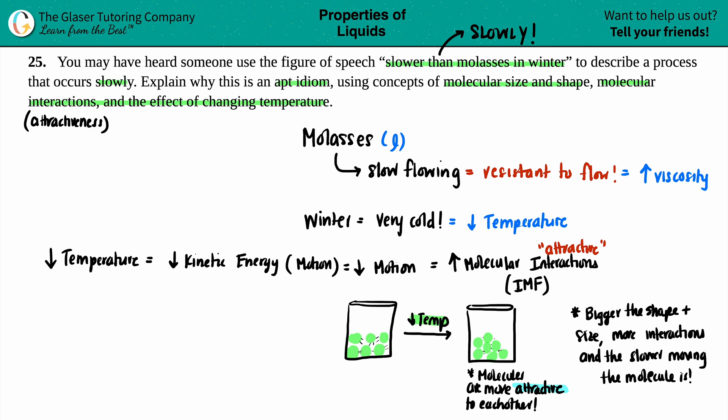And basically these two things answer the question. So now it kind of makes sense why it is slower than molasses in winter, because molasses is already slow to begin with. But if you're dropping that temperature, you're dropping the motion even more and your viscosity is going to get higher. You're even going to be more viscous. You're going to have more interactions. So I mean, this is slow, slow, slow. I hope this makes sense.